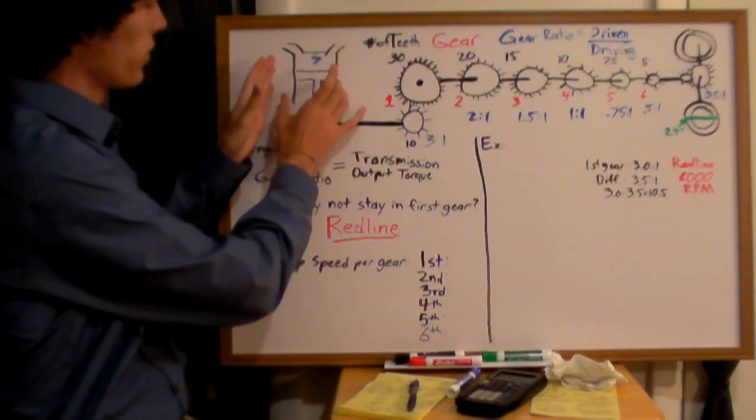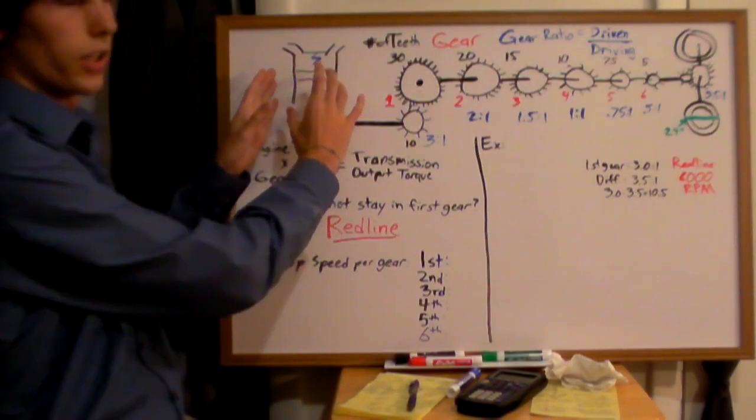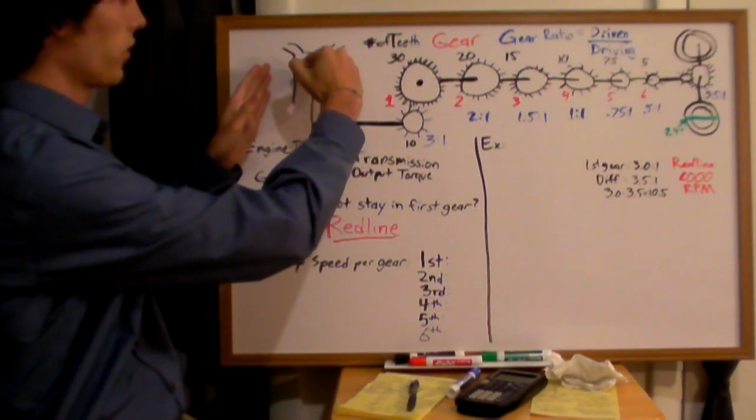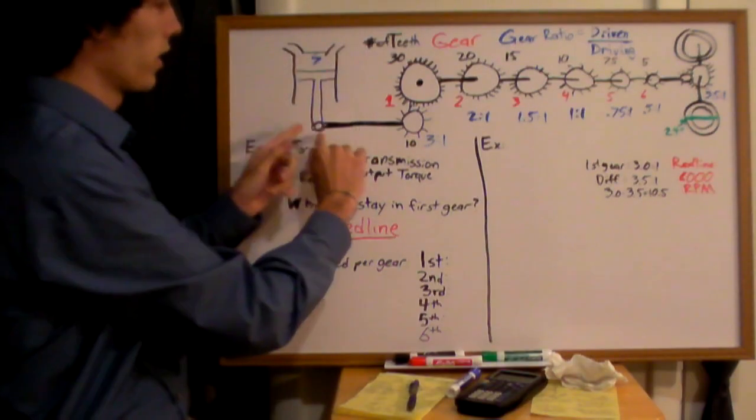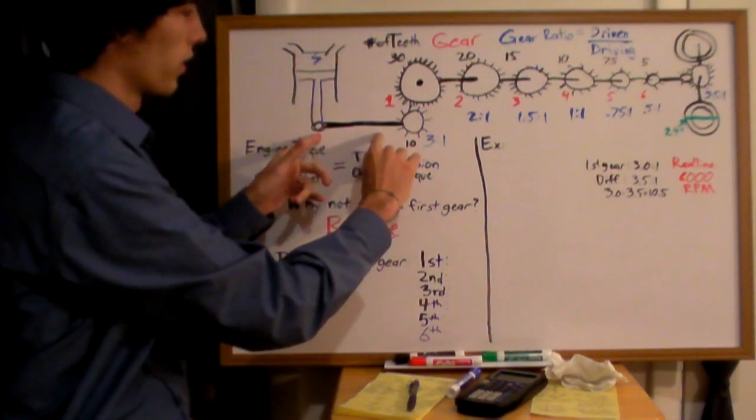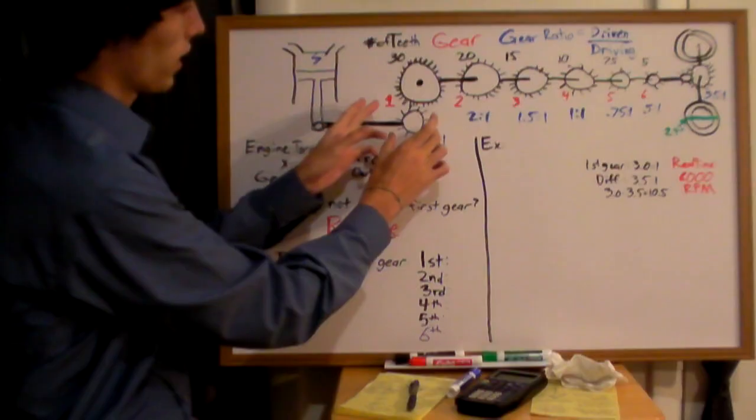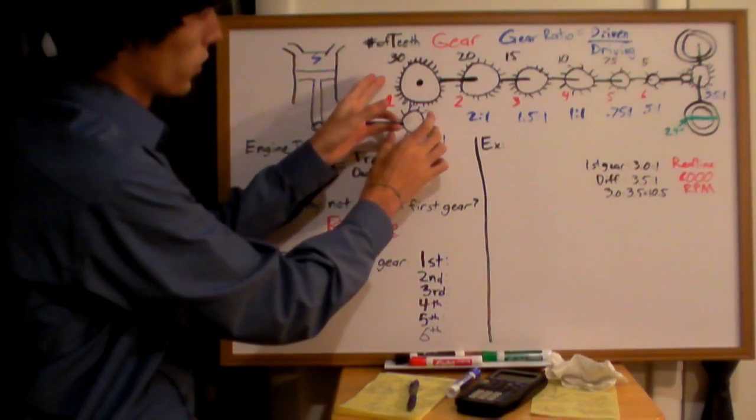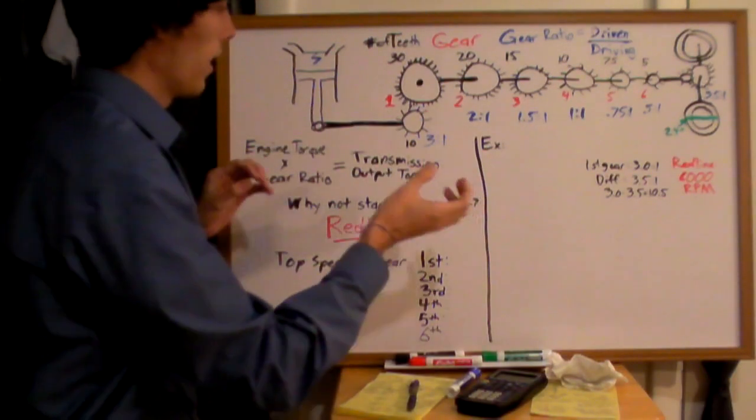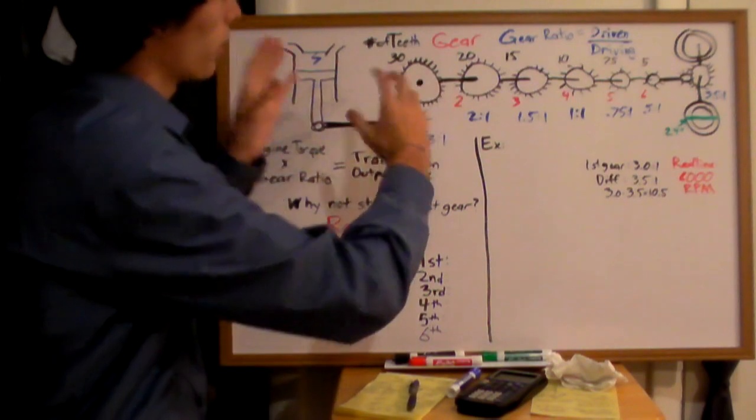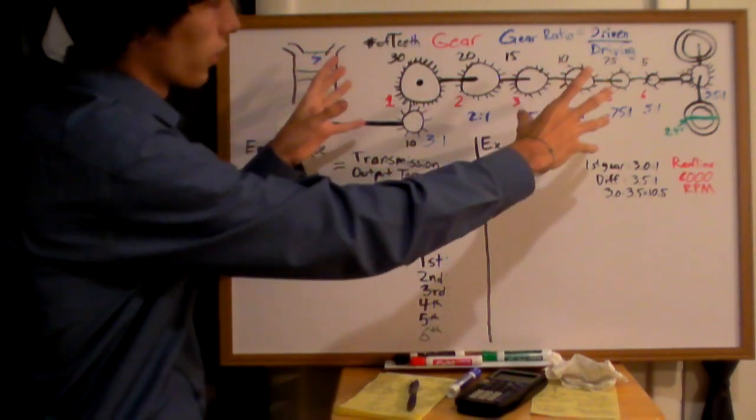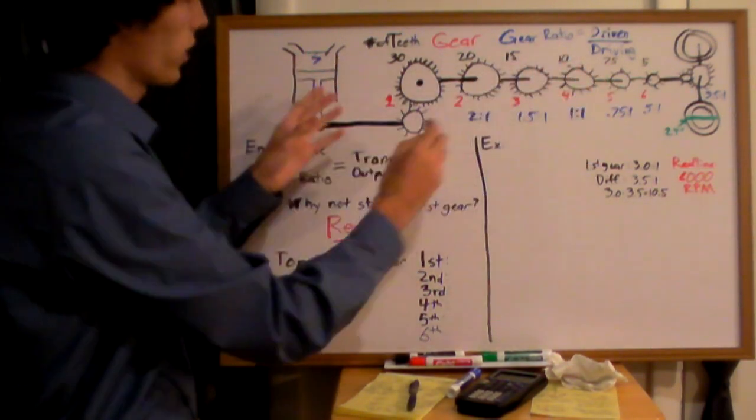So here we have our piston cylinder device. This is your engine, and as this piston moves up and down, it rotates this crankshaft. This crankshaft is connected via a gear to the transmission. Now, for example purposes, I've come up with gears for this drivetrain right here.